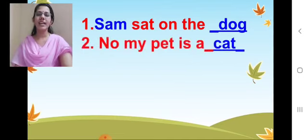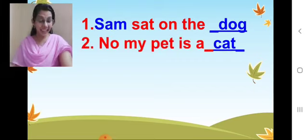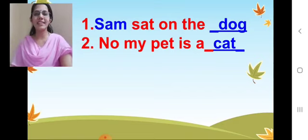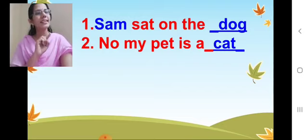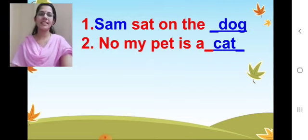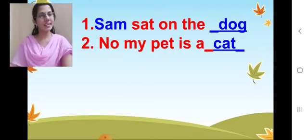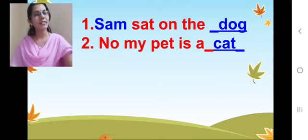Second one. 'My pet is a ___.' Cat! Excellent. Cat — write C-A-T. See in the dash, what should we write? C-A-T, cat. Write fast children. Very good. Shall we move on?